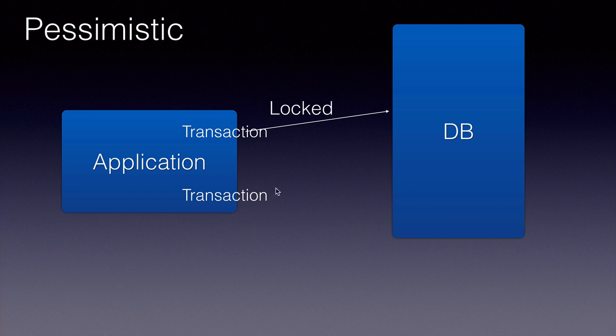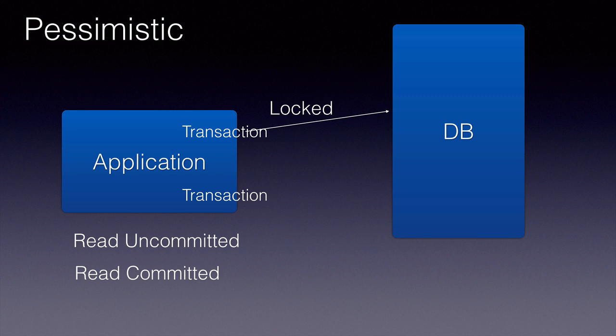In pessimistic locking, appropriate transaction isolation levels need to be set so that the records can be locked at different levels. The general isolation levels are: read uncommitted, read committed, repeatable read, and finally serializable isolation.